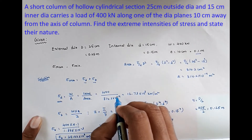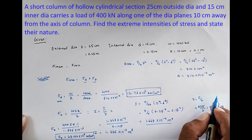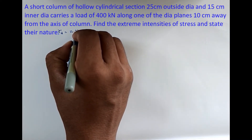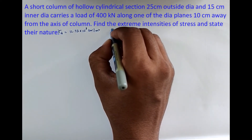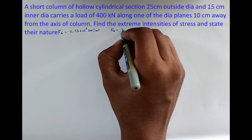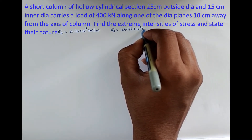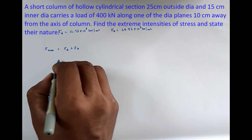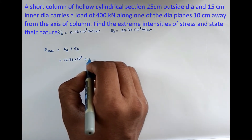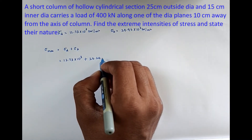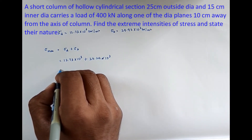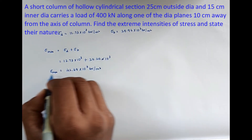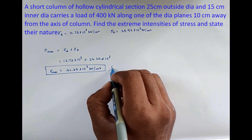With direct stress sigma_D = 12.73 × 10³ kN/m² and bending stress sigma_B = 29.96 × 10³ kN/m², sigma max = sigma_D + sigma_B = 12.73 × 10³ + 29.96 × 10³ = 42.69 × 10³ kN/m². Since it is positive, the nature is compression.